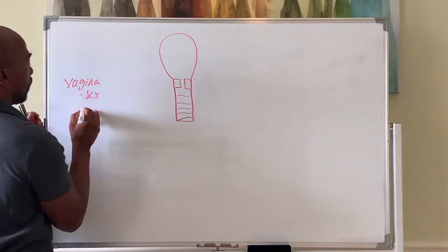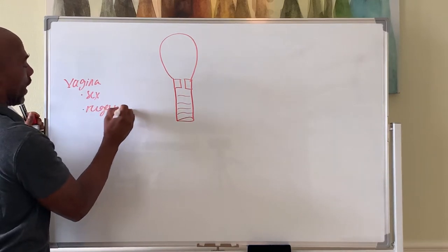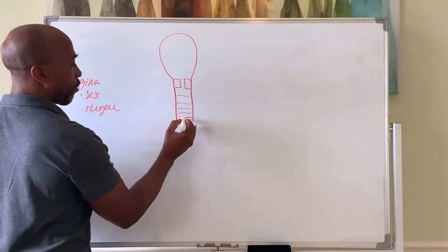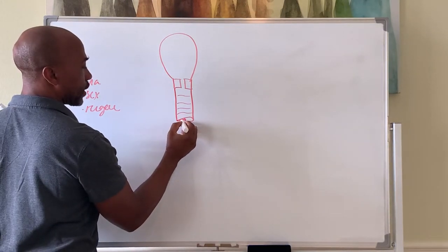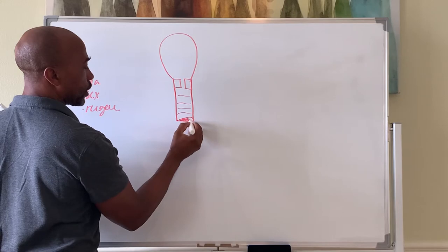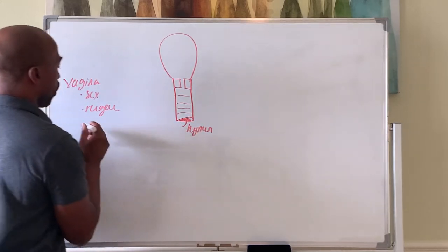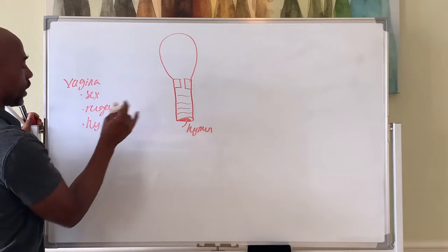The rugae allow for stretch of the vagina. It also has a membrane before first intercourse that may be broken, usually broken upon first intercourse, called the hymen. It's a partial covering.